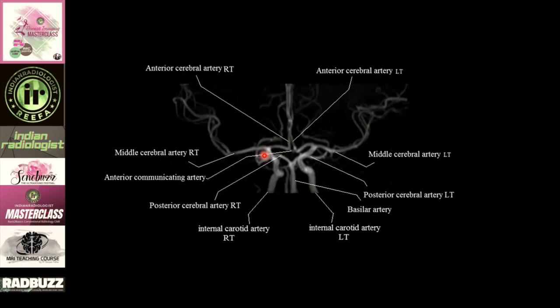Sometimes due to subarachnoid hemorrhage the vessels are in spasm, so you may not identify the aneurysm. When you perform high-resolution MR angios — even with three-tesla scanners using TOF sequences — non-contrast MR angios can identify aneurysms as small as three millimeters. Post-contrast MR angio or post-contrast CT angio will give more sensitive details of these aneurysms.